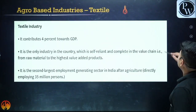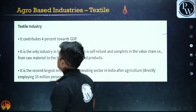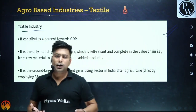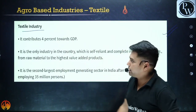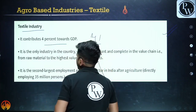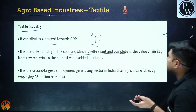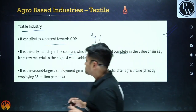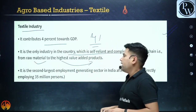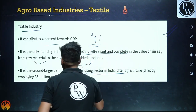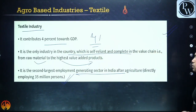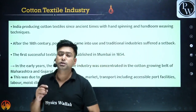Now let's look at agro-based industries. The textile industry contributes four percent towards GDP. It is the only industry in the country that is self-reliant and complete in the value chain — from raw materials to the highest value-added products. It is the second largest employment generation sector in India after agriculture, directly generating employment for 35 million people.